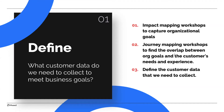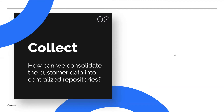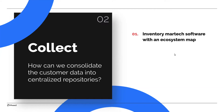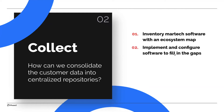Once we've defined this customer data, we need to collect the data. The question here is: how can we consolidate all this data into centralized repositories? The work is to inventory and audit the customer data ecosystem to see what you're already collecting and where it lives, then implement and configure software to fill those gaps. You want to create a MarTech ecosystem map — also called a digital experience map, a digital experience landscape, or a DX map — so we understand what we're looking for. Then integrate the data into a single repository. A customer data platform, or CDP, is just one example of one of these repositories.